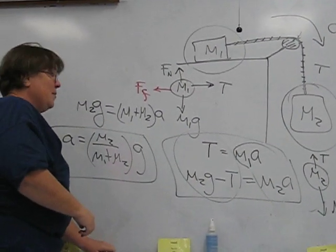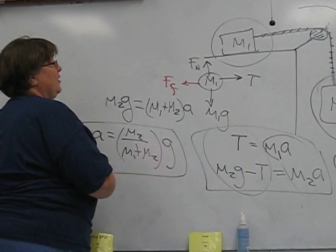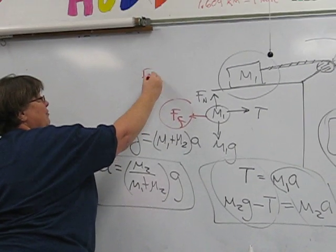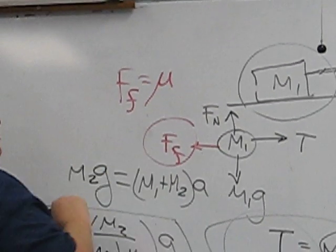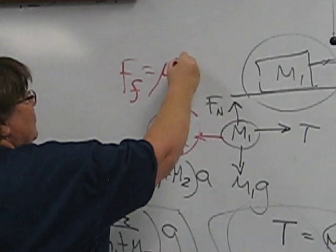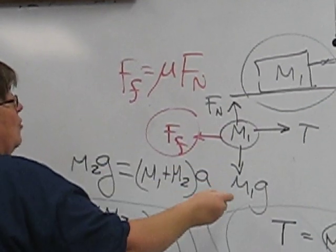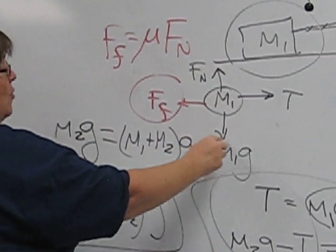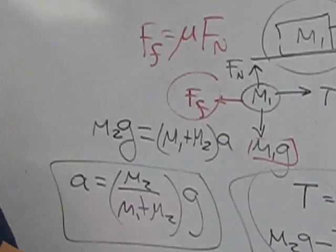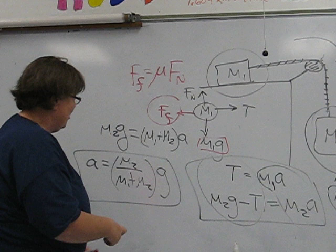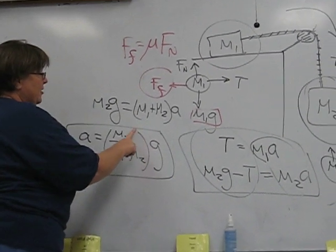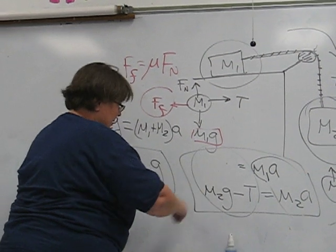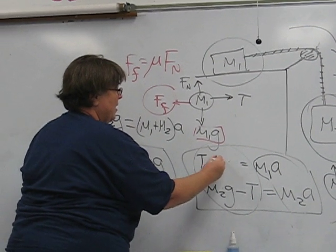Now, the only thing that might keep it from moving is friction, which I've put here. We typically model friction as the coefficient of friction times the normal force. The normal force from the free body diagram on M1 is simply the weight of M1 because that's a horizontal table.